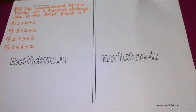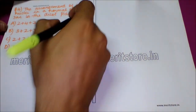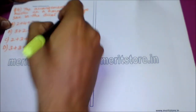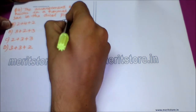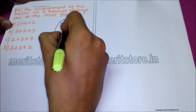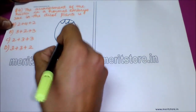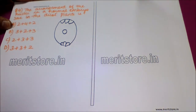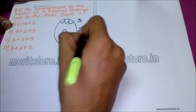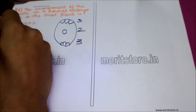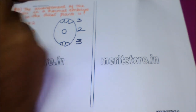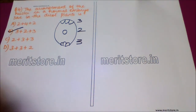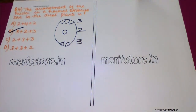The next question is: what is the arrangement of nuclei in a normal embryo sac in a dicot plant? Option A: 2+4+2. Option B: 3+2+3. Option C: 2+3+3. Option D: 3+3+2. Recalling the structure of the embryo sac: three antipodals near the chalazal end, polar nuclei or the secondary nucleus in the center, and an egg surrounded by two synergids near the micropylar end. Thus the arrangement is 3+2+3, option B. The embryo sac is a seven-celled, eight-nucleate structure.